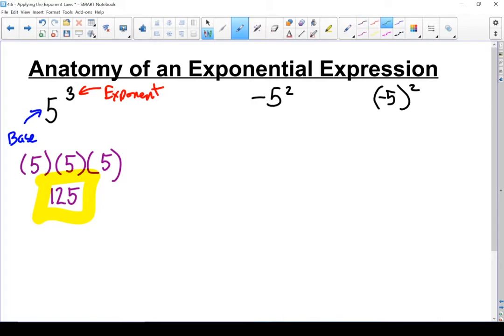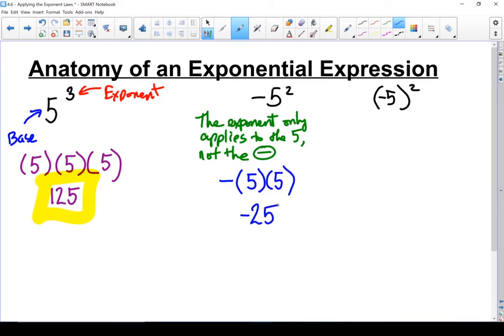On this first one, the one without the brackets, it's only the 5 that's squared, not the negative sign. So if I write that out it looks like a minus, because that's out front, and then two 5s. My answer is minus 25.